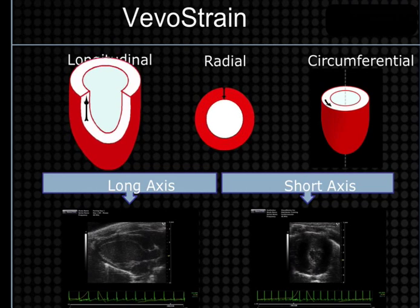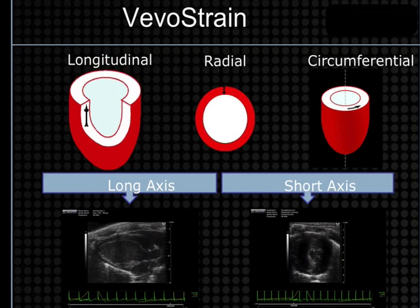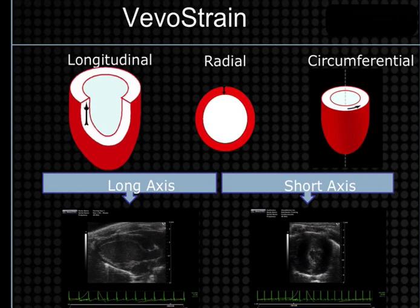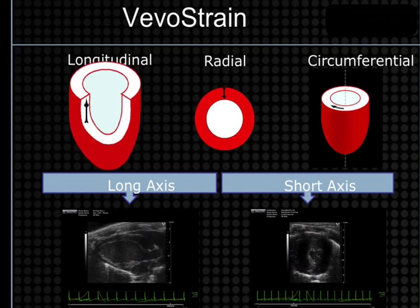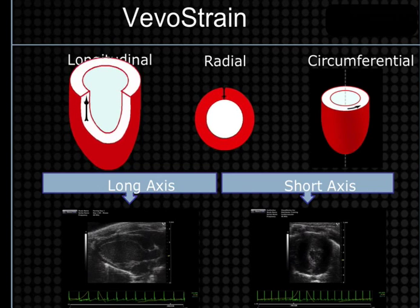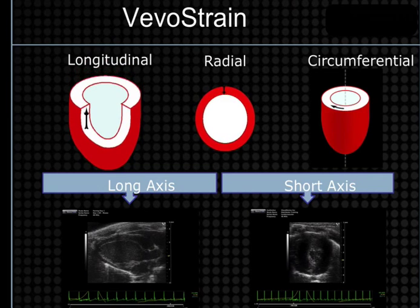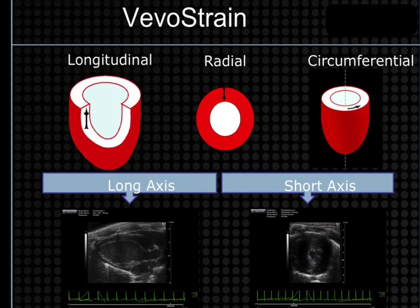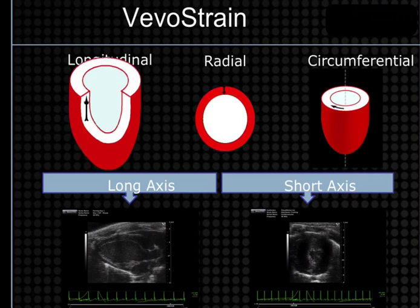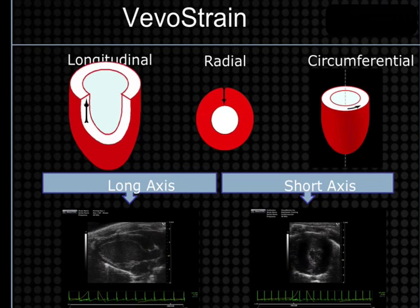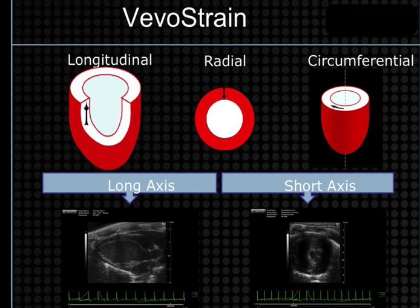Our Vivo Strain package allows us to analyze the different motions of the heart. The heart moves in longitudinal, radial, and circumferential fashion, and we want to be able to capture and measure things like strain, strain rate, and so on.